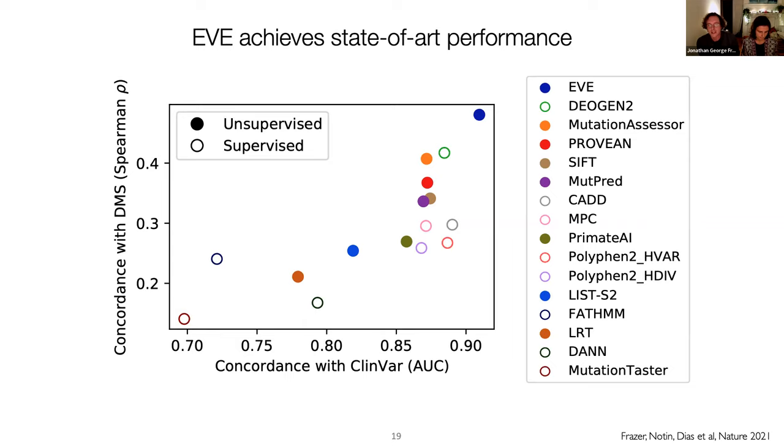And this was surprising to us because these methods use the labels during training, so it makes sense that they would be particularly strong at this task. So yeah, it was, and for the reasons that Mafalda described, we were very keen to be unsupervised so that this could be treated as an independent source of evidence in variant classification pipelines. So we were not expecting to actually outperform these other methods on this particular task, in part because the benchmark includes labels that are used during training, so there's a certain circularity here,